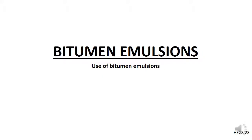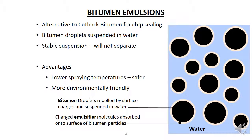This video is a basic discussion on the use of bitumen emulsions. A bitumen emulsion has bitumen droplets suspended in water, and it is an alternative to cutback bitumen. Bitumen and water do not usually mix, as particles repulse each other, meaning they will not bond to form a solution the way that kerosene and bitumen do in cutback bitumen.